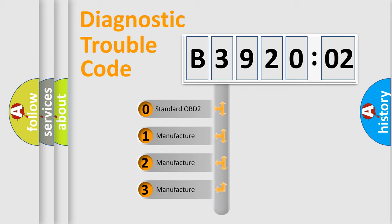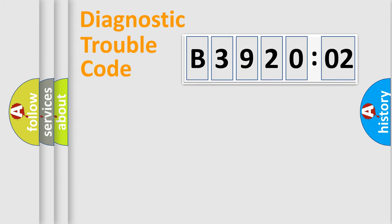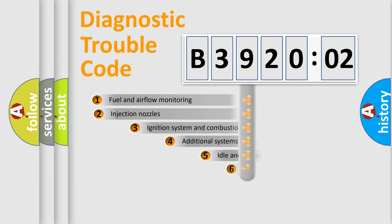If the second character is expressed as zero, it is a standardized error. In the case of numbers 1, 2, or 3, it is a manufacturer-specific expression of the car-specific error.